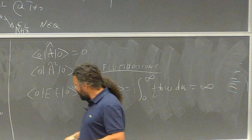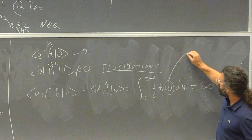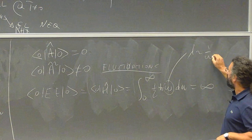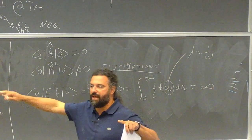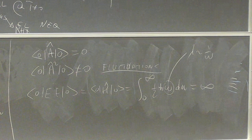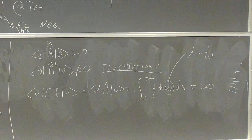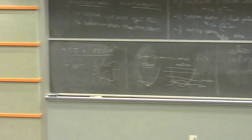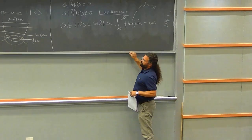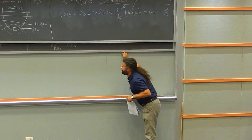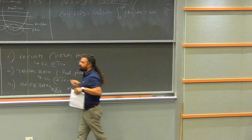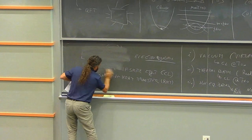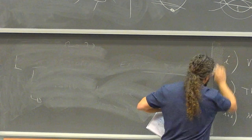Each frequency ω is associated with a wavelength λ going like one over ω, so you have fluctuations at all wavelengths with no limitation from λ equal to zero to λ equal to the size of the universe. The idea of the Casimir effect is: I have something which is infinite, but what happens if I insert boundaries in my space? I do not have only the entire universe but I set some boundaries — in particular ideal, perfectly reflecting boundaries.